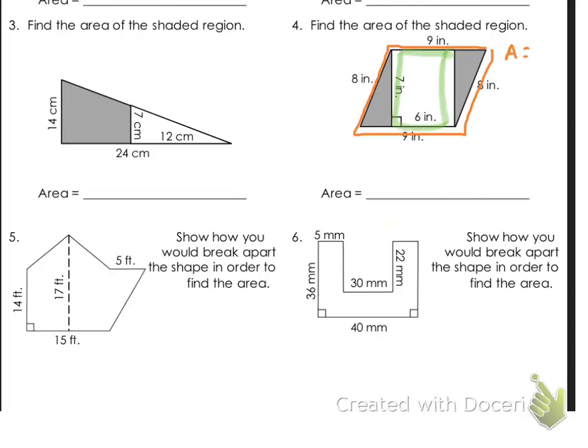It's going to be, the bases are nine, because that's what's connected to the 90 degree angle. And then the height would be seven. So it's nine times seven, base times height. Nine times seven is 63, so our area of that big piece is going to be 63 inches squared.